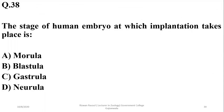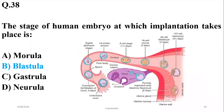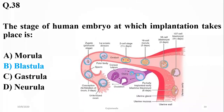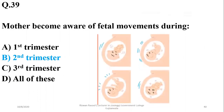Number thirty-eight: the stage of human embryo at which implantation takes place is the blastula stage, during which the embryo is implanted in the uterus. Number thirty-nine: the mother becomes aware of fetal movements during the second trimester of pregnancy — that is, after three months the movements may become apparent.